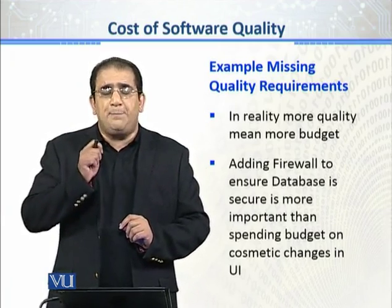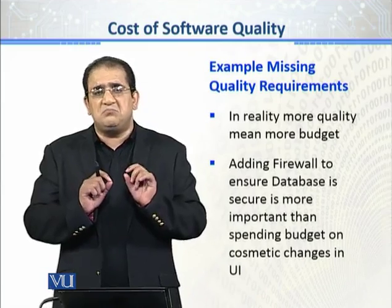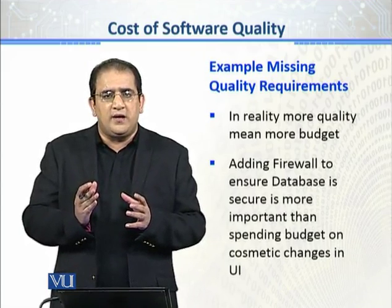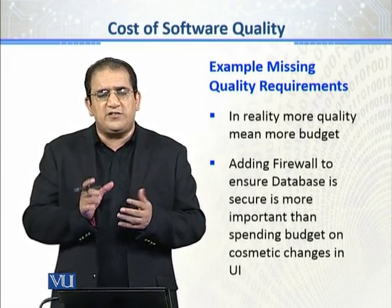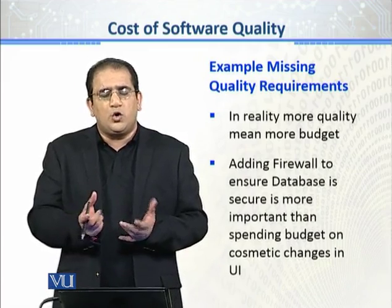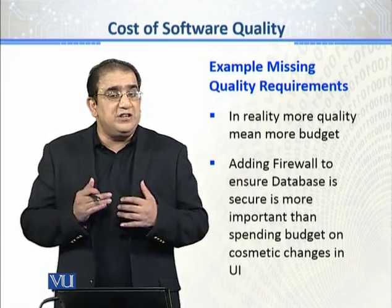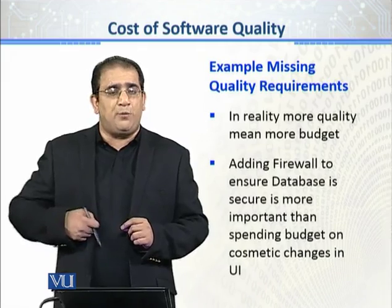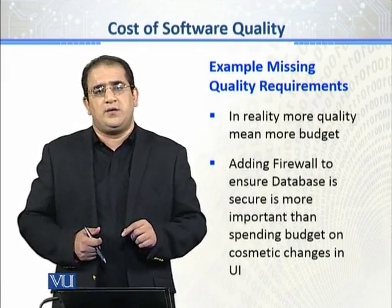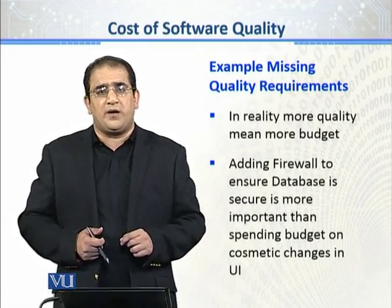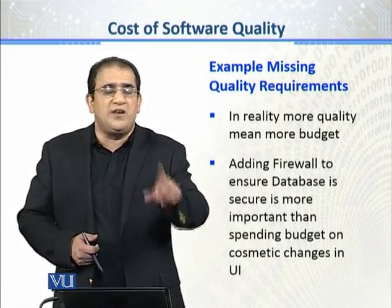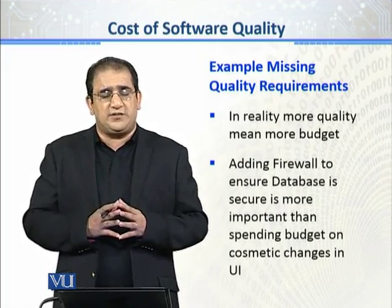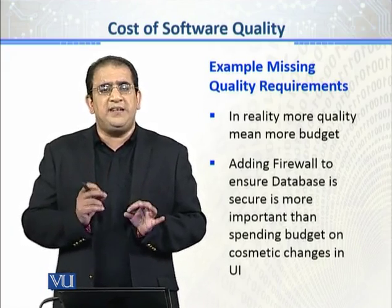Facebook, Twitter, and WhatsApp can bear a slight missed text in their UI — for example, if a name font or name placement is not on the right side, the user can live with it. But what they cannot live with is a scenario where, for example, a shared post on WhatsApp that is encrypted gets sniffed or hacked somehow.